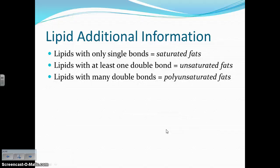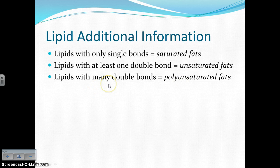Lipids that have only single bonds are called saturated fats — you've probably heard these terms before, and now we're learning what they mean. Saturated fats are saturated with single bonds. Lipids that have at least one double bond are called unsaturated fats, and lipids that have lots of double bonds are called polyunsaturated fats — remember, poly means many.